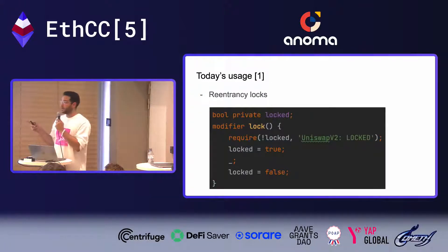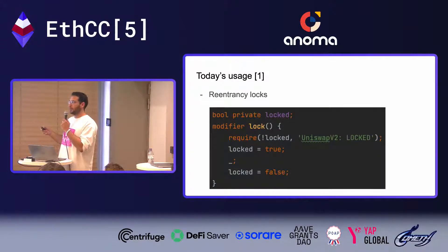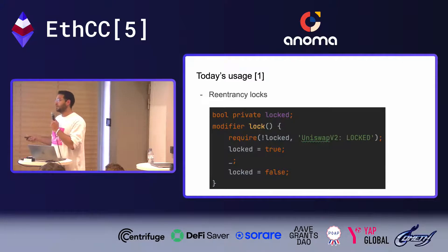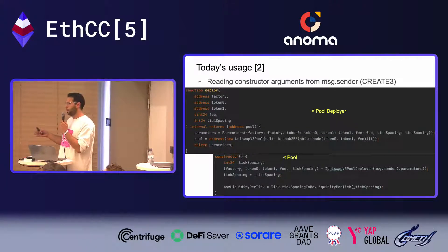The first usage is re-entrancy locks, which prevent re-entrancy — the cause of a huge fraction of all smart contract vulnerabilities. You've probably already seen this pattern.